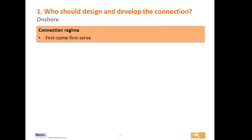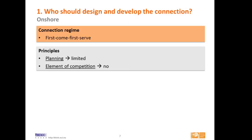First, onshore — how do we connect generators? The regime is referred to as first come, first serve. A generator developing a power plant goes to the TSO to ask for a connection, and the TSO deals with these requests on a first-come-first-served basis — a very simple procedure. If we look at this from two points of view — planning and competition, two important principles for transmission investment — planning is quite limited under this scheme, and there is no real element of competition since only TSOs are able to design and develop connections.